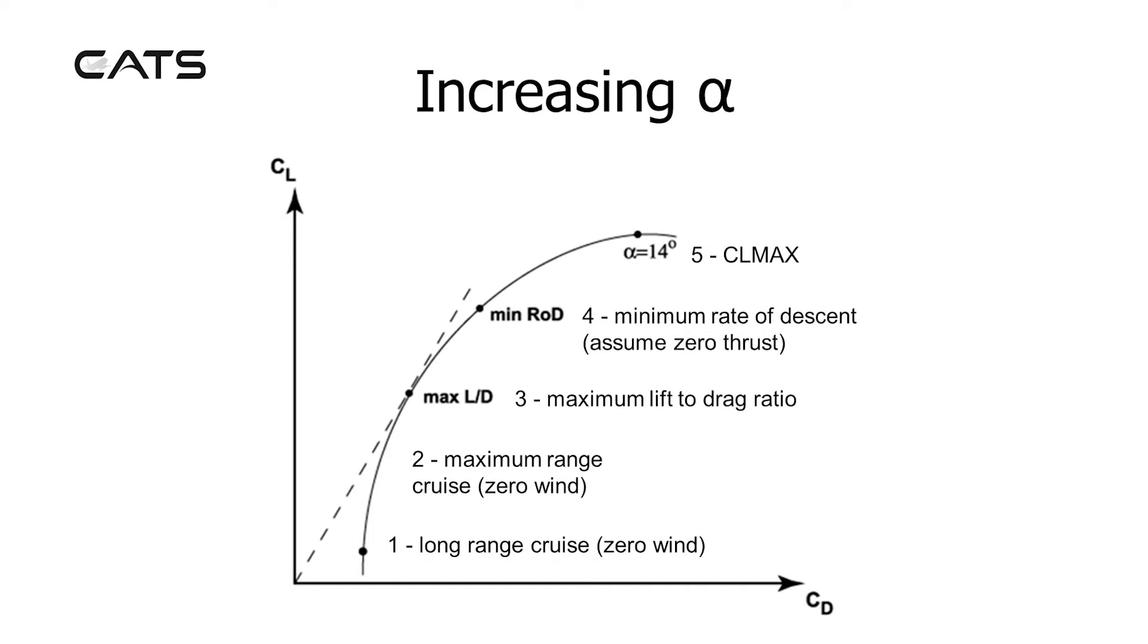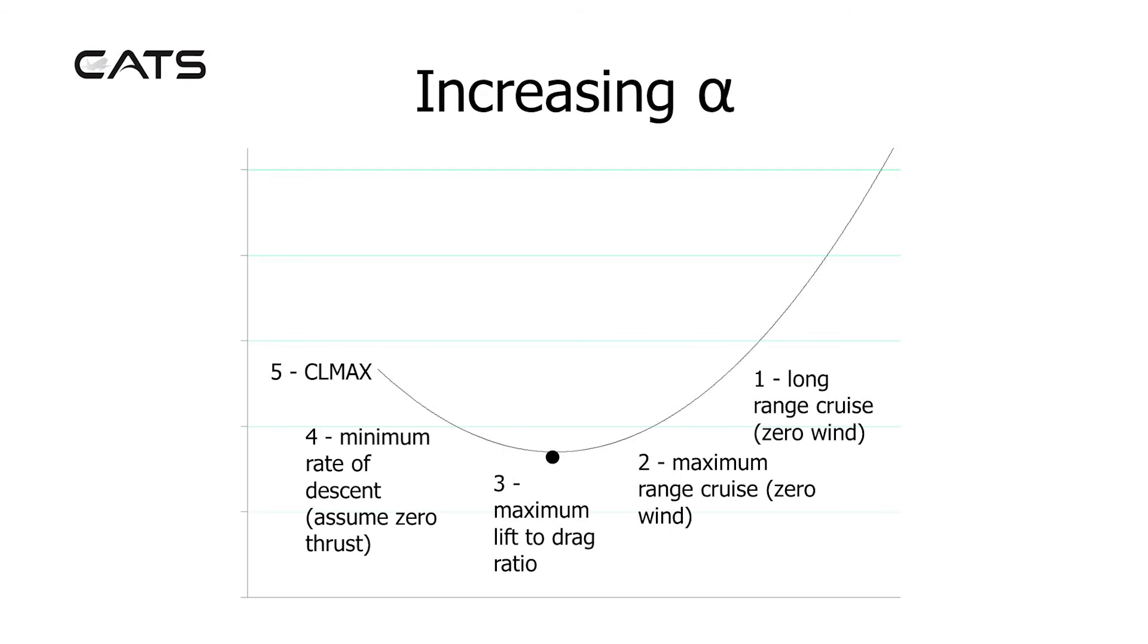Point 4 is the minimum rate of descent, assuming zero thrust. And point 5 is CL max, the maximum amount of lift on the graph. If you twist the graph around, you can see those same points but in a different orientation.